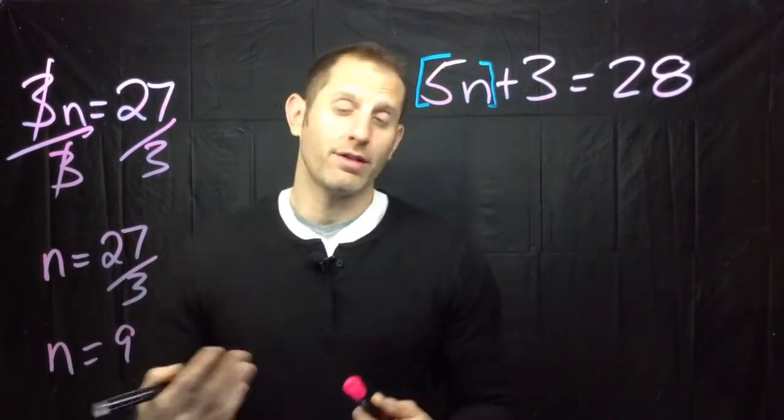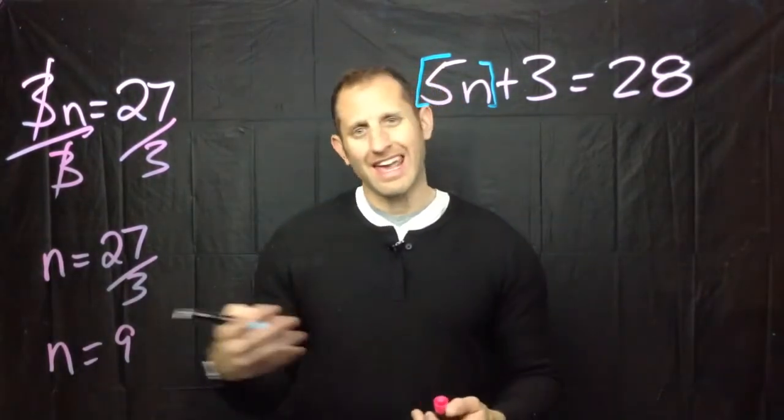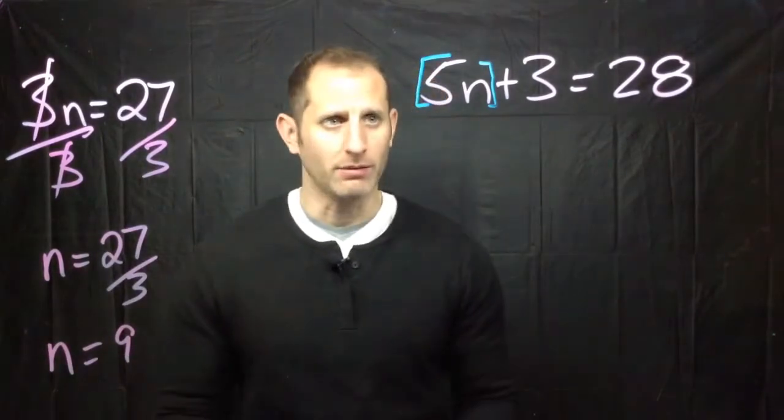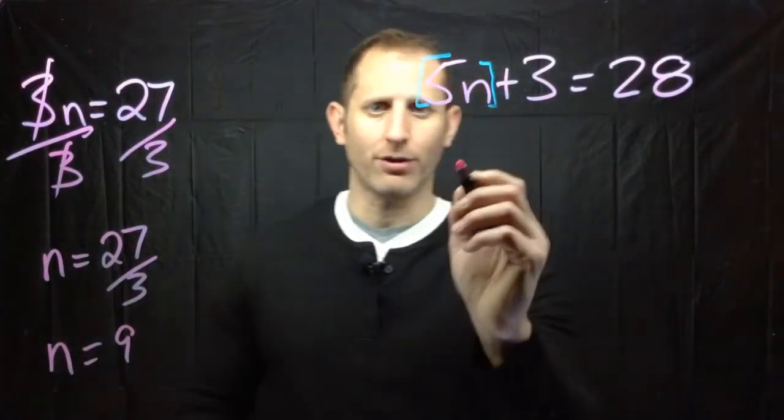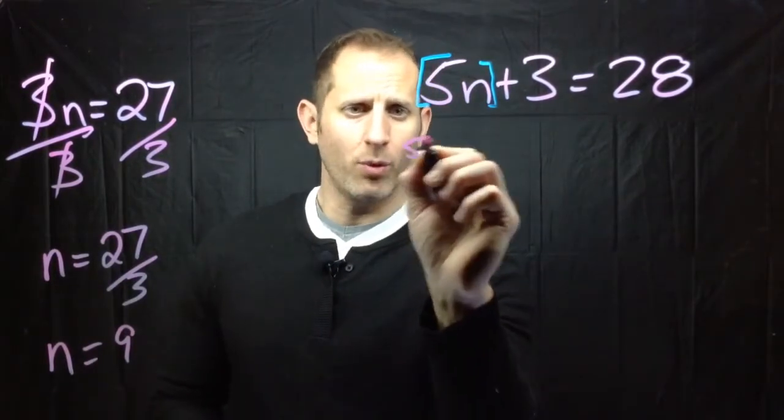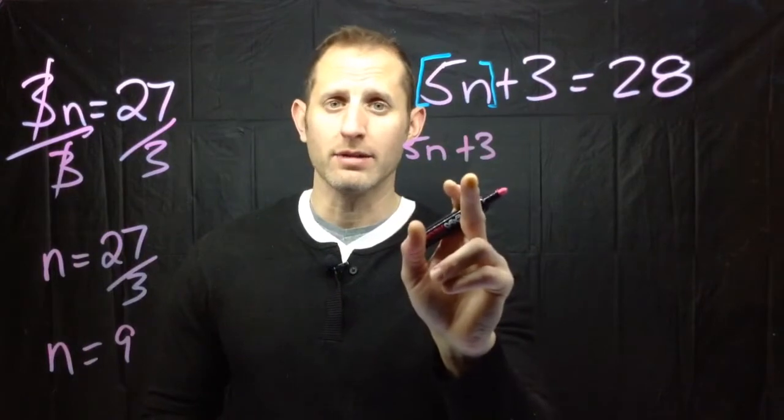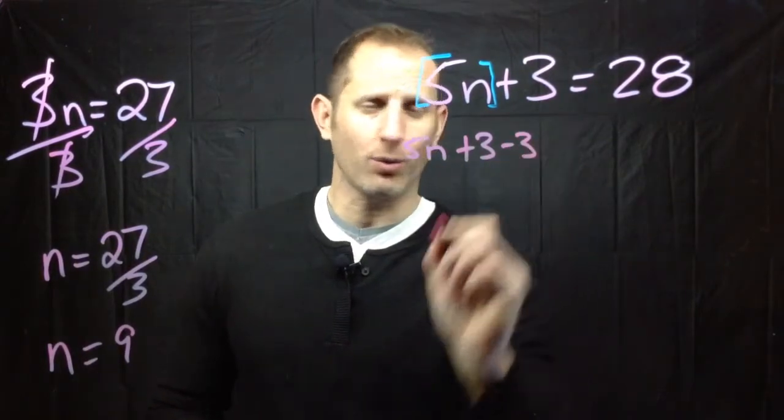And if you remember anything about integers in order to cancel out positive 3 you have to subtract 3. So let's go ahead and do that. Let's subtract 3. I'm going to rewrite this. So I'm going to put down 5n plus 3 because that's what my original equation was. And then I'm going to subtract 3 from it.